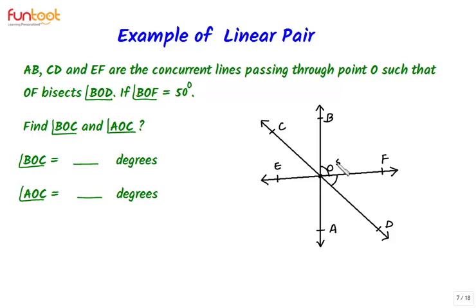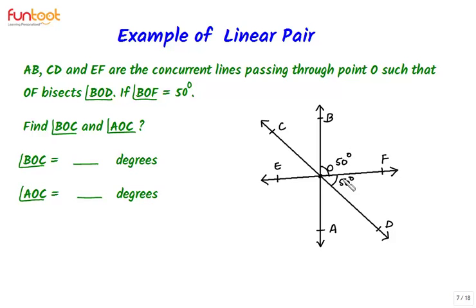That means this angle is 50 degrees, and as OF is the bisector of angle BOD, this angle will also be 50 degrees. Now we know the measure of angle BOD — that will be 50 plus 50, which is 100 degrees.